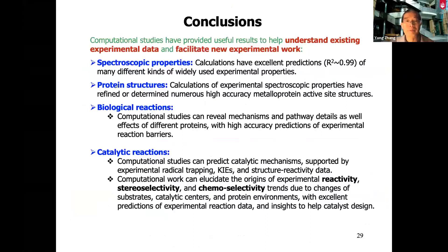In summary, calculations using quantum chemical methods can give excellent predictions for spectroscopic properties, protein structures, and biological and catalytic reactions — dealing with not only reactivity and mechanisms, but also stereoselectivity and chemoselectivity, like differences between different kinds of chemical transformations.